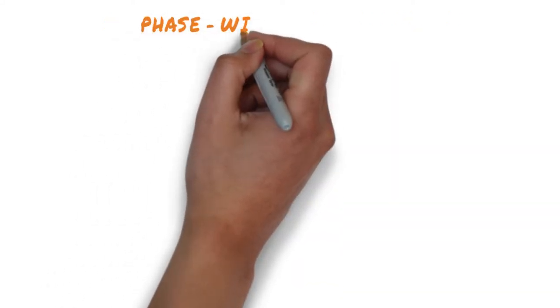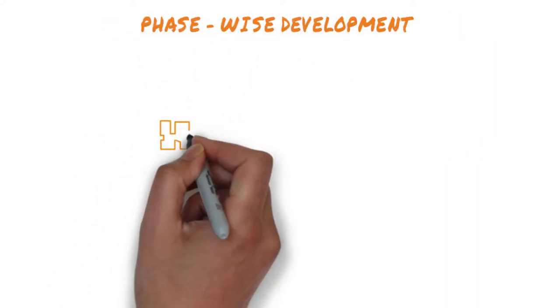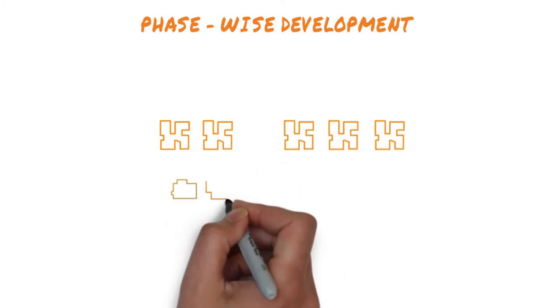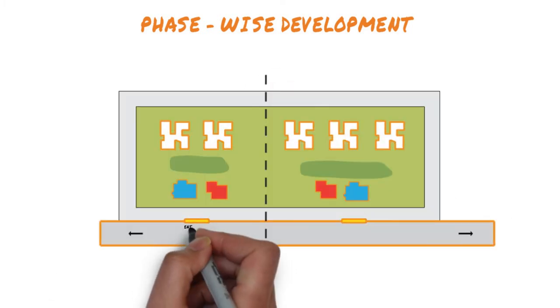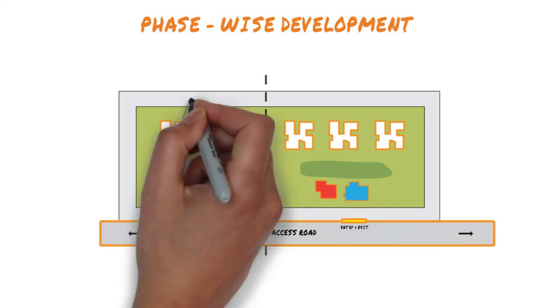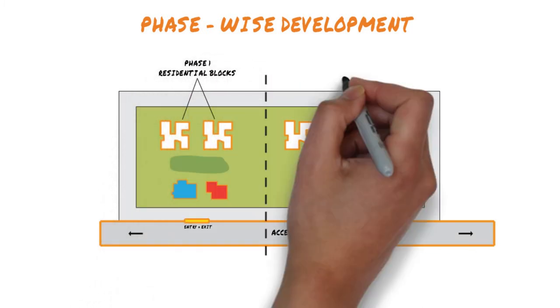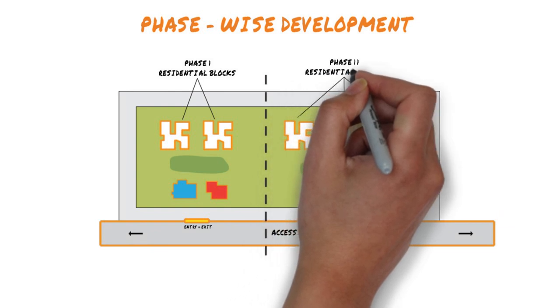Finally, we have phase-wise development. This type of project is constructed in stages. Each phase may or may not have all the amenities you want. For a project like this, check if all phases have all the amenities. If not, find out if your house lies in the phase which has them.